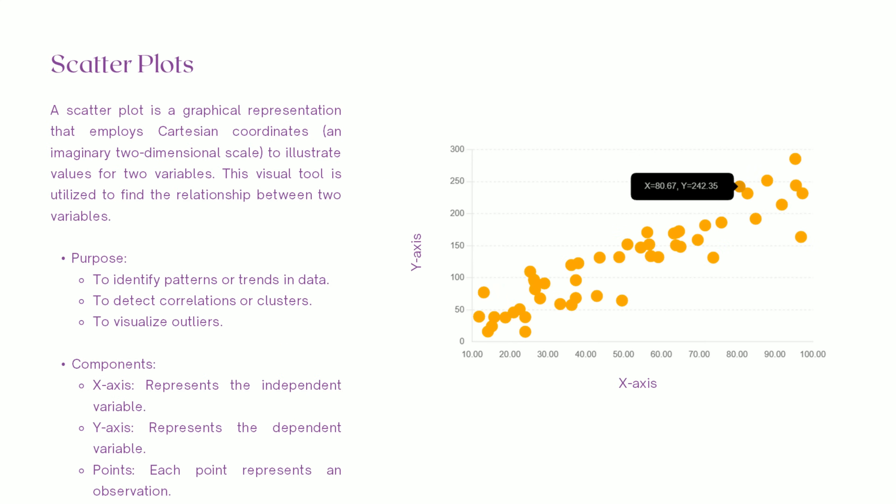Let's start with scatter plots. What exactly is a scatter plot? A scatter plot is like a snapshot of your data's behavior. Imagine a graph where the x-axis represents one variable, say temperature, and the y-axis represents another variable, like ice cream sales. Each dot on this graph represents an observation.